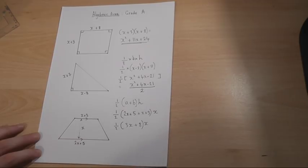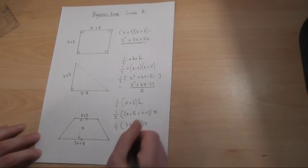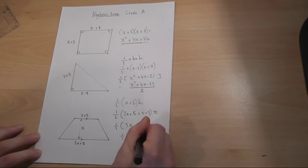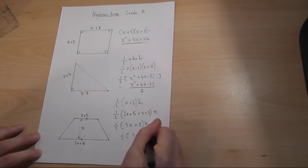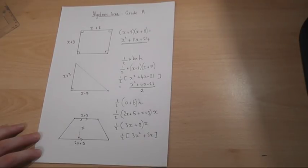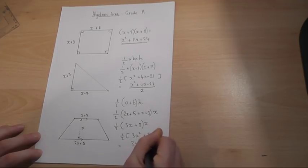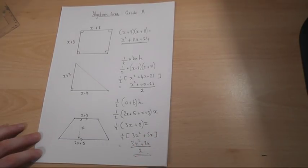Don't worry about the half yet, we expand that part of the expression to give us 3x times x is 3x², 8 times x is 8x. And then to finish off, we write the bit in the bracket all over two. And that is an expression there for the area of the trapezium.